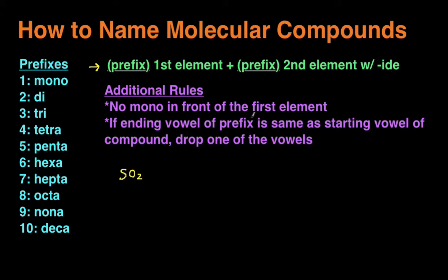It'll make a lot more sense when we go through the examples. The additional rules are: there's no 'mono' — you don't use the prefix 'mono' in front of the first element, but you do use it in front of the second element. And if the ending vowel of the prefix is the same as the starting vowel of the element name, you drop one of the vowels. Again, this will make a lot more sense when we start doing examples.